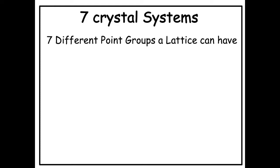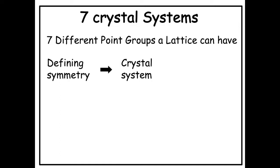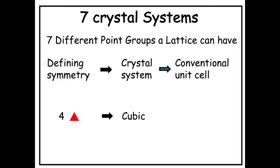The 7 crystal systems are 7 different point groups a lattice can have. A crystal system is defined by a characteristic symmetry. For example, the cubic crystal system is defined by 4 three-fold axes. Once we have defined the crystal system on the basis of symmetry, we can choose a conventional unit cell based on the relationship between lattice parameters. For cubic, the conventional unit cell has a = b = c and α = β = γ = 90 degrees.